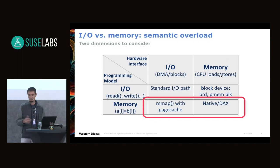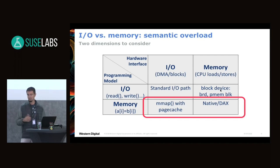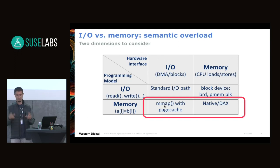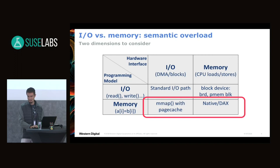Combining those dimensions: a block-based hardware interface with an I/O programming model is the standard I/O path. Conversely, DRAM with loads and stores used via direct pointer references is the standard memory use case, and that's also how you'd use a DAX device. You can also use a memory hardware device in an I/O manner — for example, using a block RAM disk or the PMEM interface — and vice versa, making an I/O device into a memory programming model by mmap-ing files and letting the fault handler bring pages into host memory transparently.